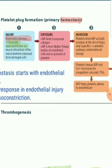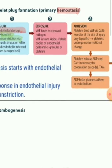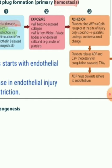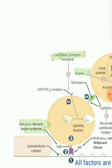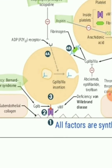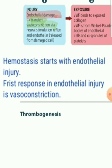Von Willebrand factor, synthesized in the endothelium, is exposed to platelets. It is stored in the Weibel-Palade bodies of endothelial cells and in the alpha granules of platelets. This exposure results in von Willebrand factor cross-linking between the platelet and the damaged endothelium. Whenever there is a deficiency of von Willebrand factor, it leads to bleeding tendency. It is the most common cause of genetic deficiency — acquired deficiency is mostly through drugs or secondary disorders like antiphospholipid syndrome.